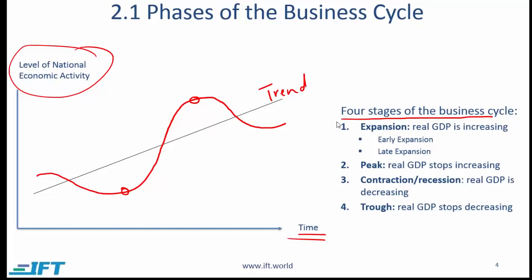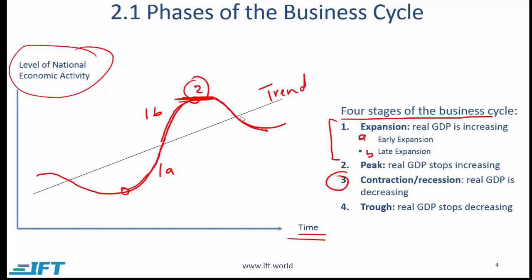The four stages are: first, expansion where real GDP is increasing — this can be broken into early expansion (1a) and late expansion (1b); second, the economy peaks (point 2); third, contraction or recession where the economy slows down (point 3); and fourth, a trough where the economy bottoms out (point 4).